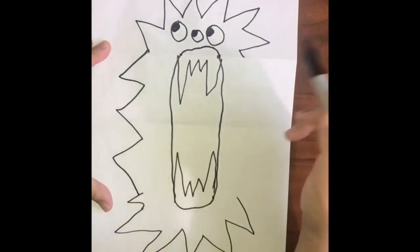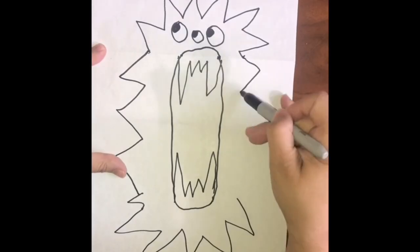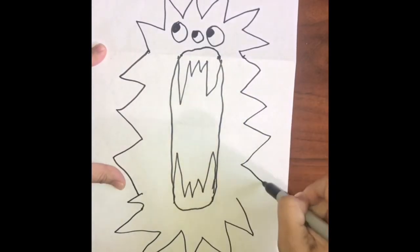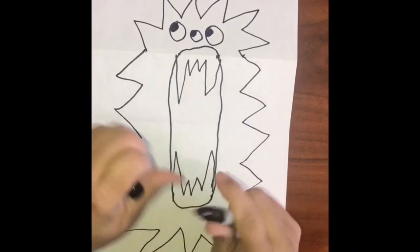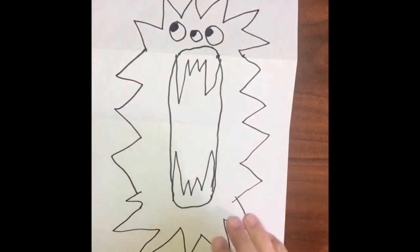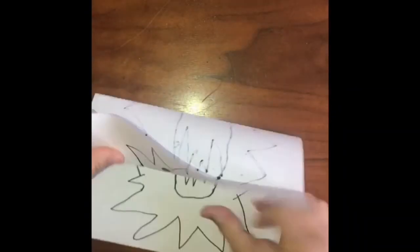Then, you want to complete the body. You can add arms, flagella, spots, anything you want to complete your creature. And then, color it.